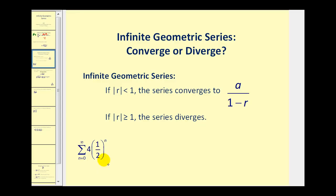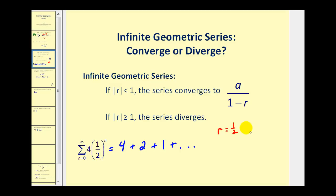So looking at the first few terms of this series: four times one-half to the zero is four, plus four times one-half to the first is two, plus four times one-half squared is one, and so on. Our common ratio r is equal to one-half, and the first term is equal to four. Since the absolute value of r is less than one, this infinite geometric series does have a sum and therefore converges.